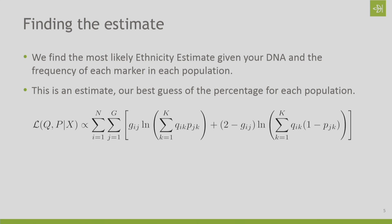Once we have all of these different markers, we can start to come up with the most likely explanation for your DNA, given what we see in our reference panel. Your ethnicity estimate is our best guess of how much ethnicity you have from each of these regions — it is the most likely explanation for what we are seeing in your DNA. In our white paper, we break down how we get to this equation starting with the frequency of DNA in each population.